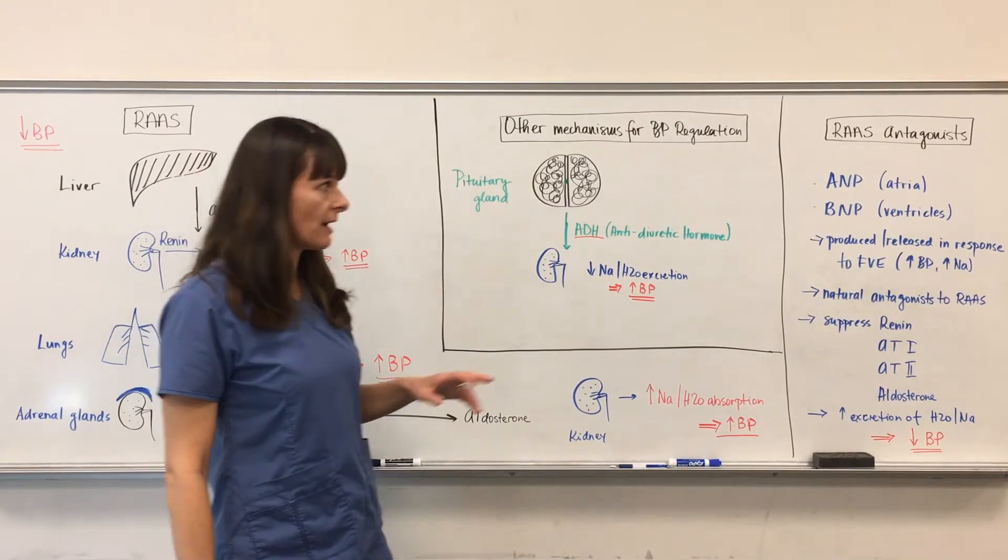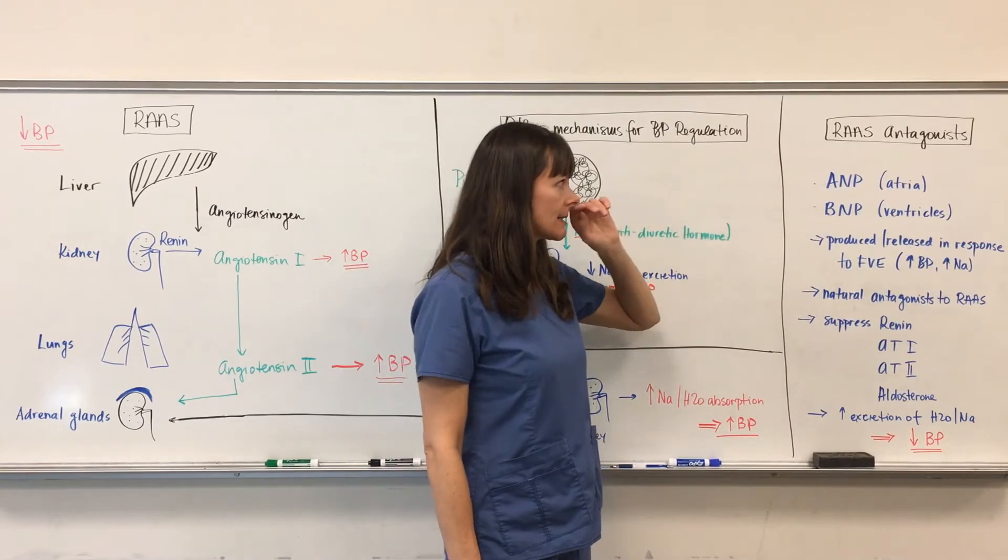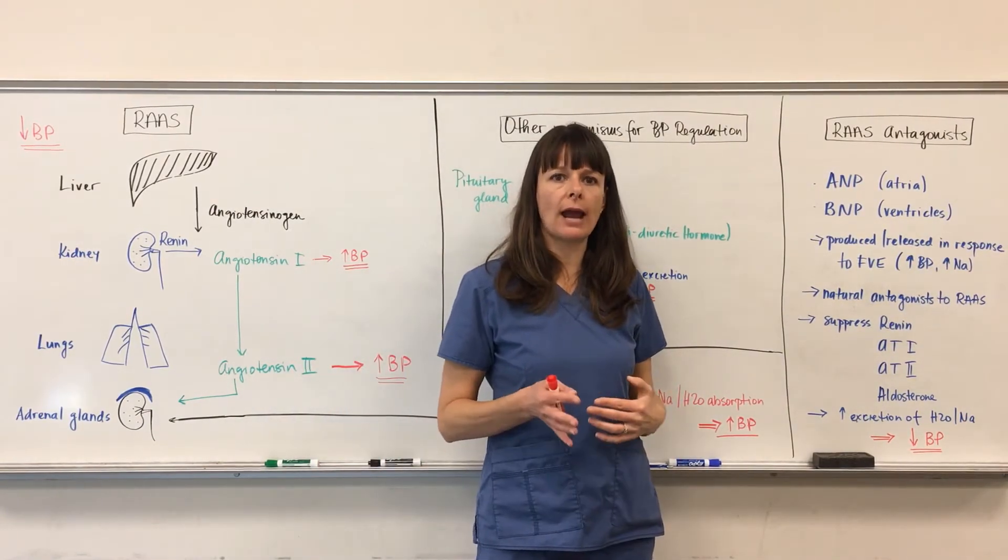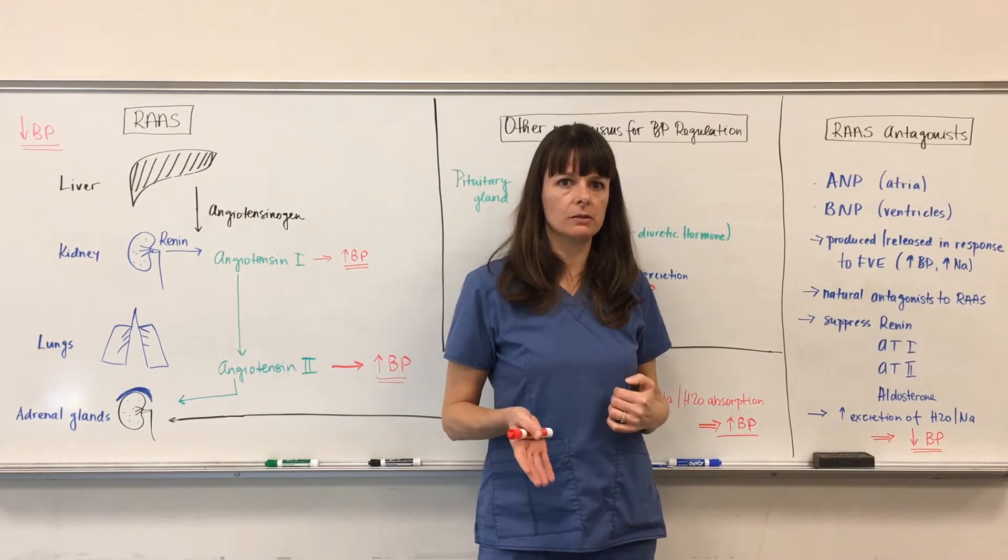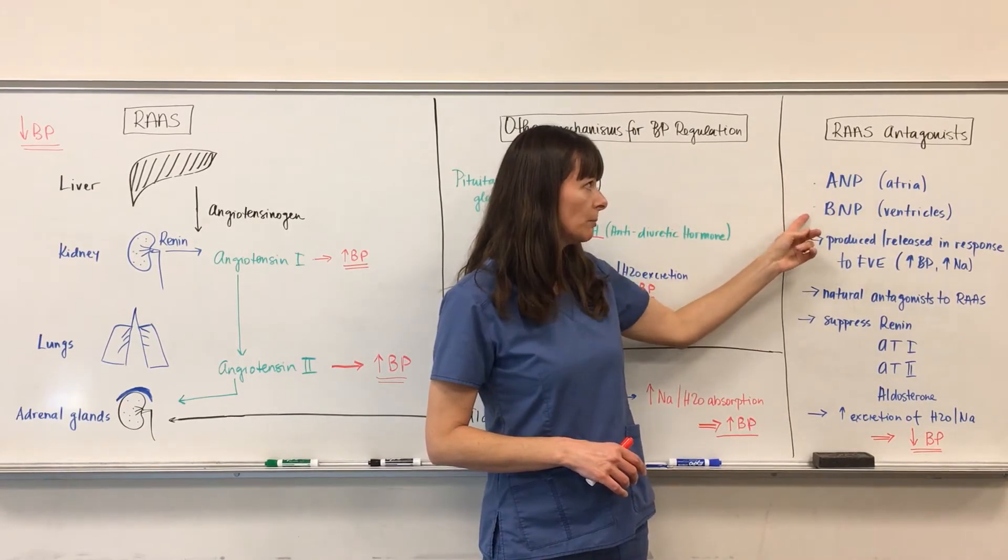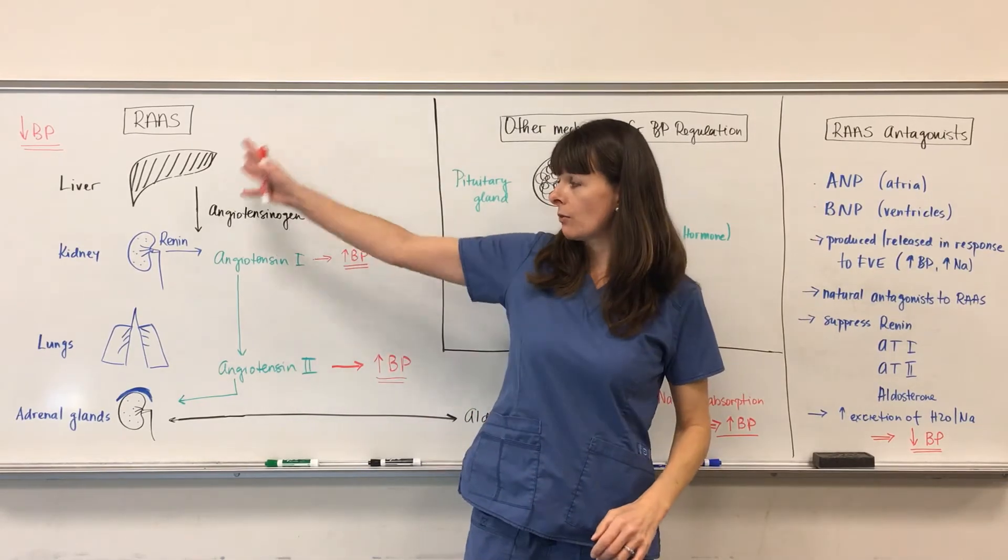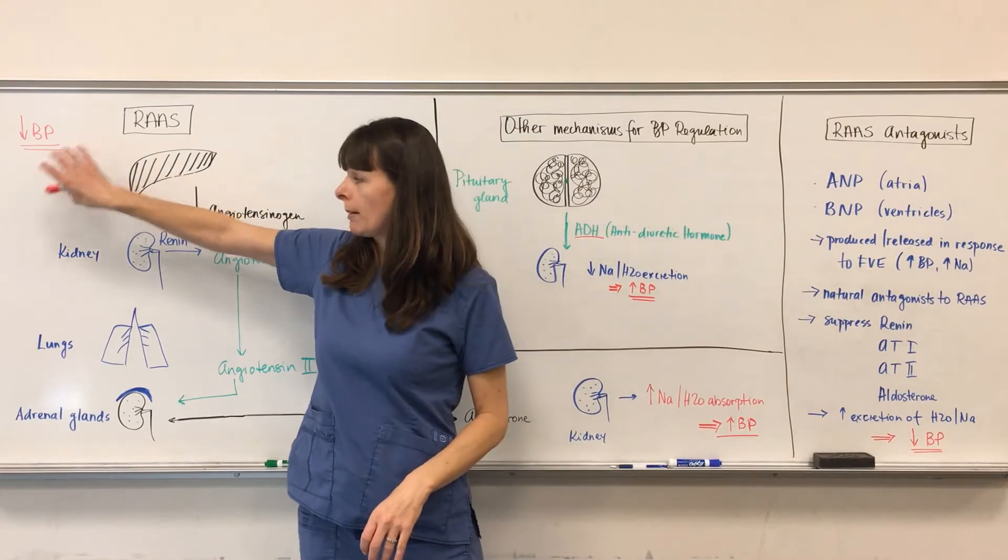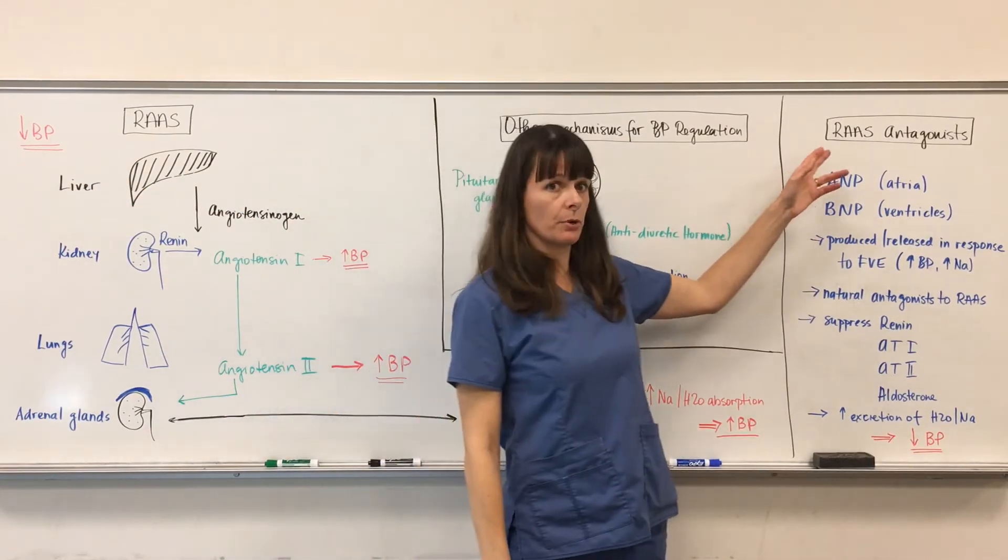Now then we have the RAS antagonists, and whenever you think about antagonists, think about something that counteracts the effect of something else. So in this case, the RAS antagonists ANP and BNP counteract the RAS system. So now if the problem is not low blood pressure, but high blood pressure.